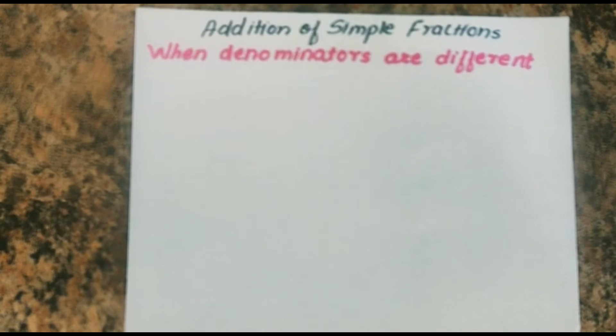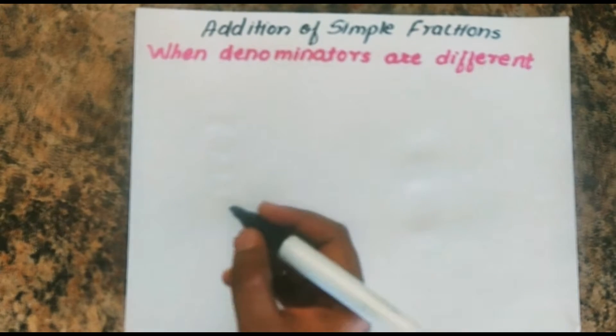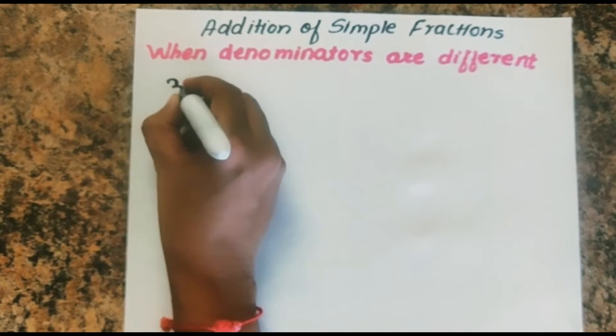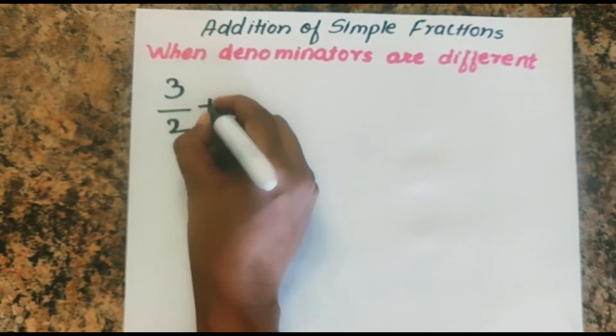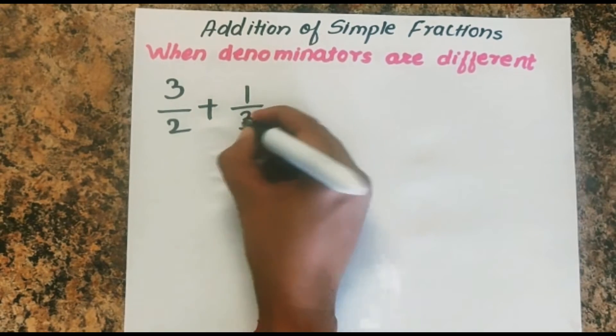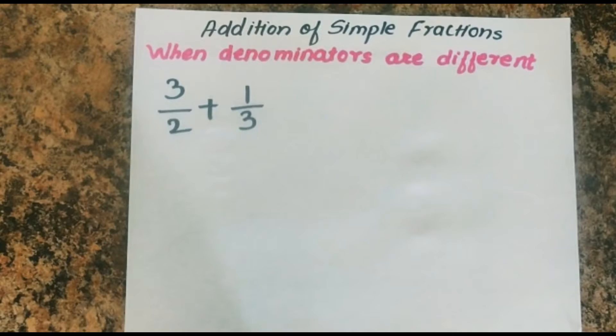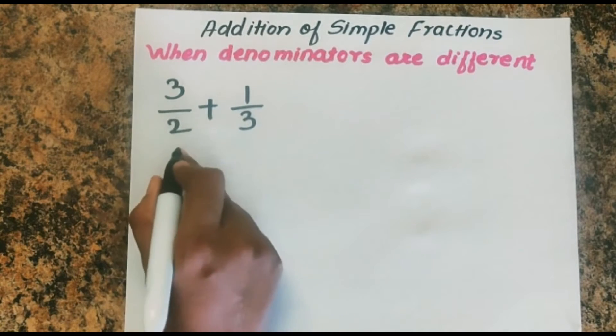We saw how to add simple fractions when denominators are the same. Now let's look at an example when denominators are different, for example, 3 upon 2 plus 1 upon 3.